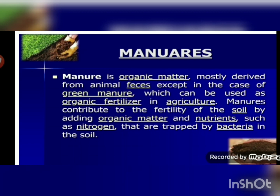Manure provides humus to the plant and increases the fertility of soil, and also increases the water-holding capacity of soil. However, manure contains more humus and less nutrients, so along with manure, certain fertilizers are also required by the plant to fulfill the need of specific nutrients or specific minerals.